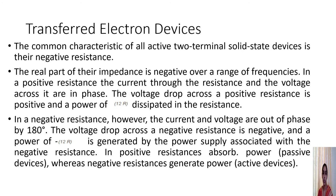The Gunn diode can also be called a TED, that is a Transferred Electron Device — you will understand why when studying its operation. The common characteristic of all active two-terminal solid-state devices is negative resistance. The tunnel diode also has a negative resistance property, which is why it finds applications in microwave circuits. Similarly, all two-terminal solid-state devices exhibit negative resistance, and in the Gunn diode we also use this property.